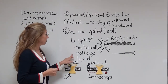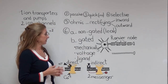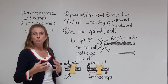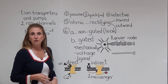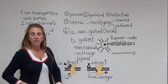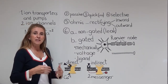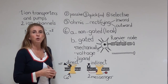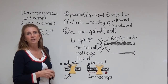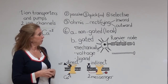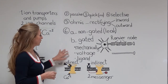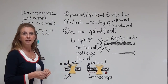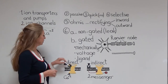The second group is voltage-gated channels. We know that there is a voltage difference across the cell membrane, and this voltage must change for the voltage-gated channels to open. We are going to talk about them in more detail in the action potential video.